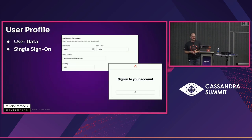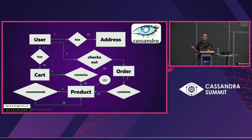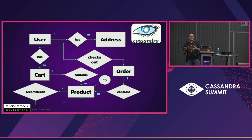For user profile, you want a way for users to log in. I've built in Google single sign-on, so you can click 'use Google.' You can also do GitHub or Facebook. The actual ER model kind of looks like this — we have users who have addresses and shopping carts, those carts can contain products, products can recommend each other, and orders also contain products. It's a little bit of a complex relationship.